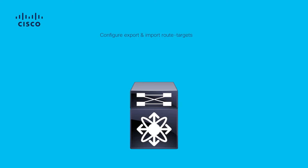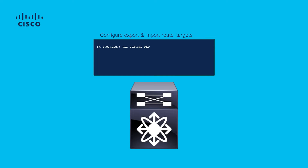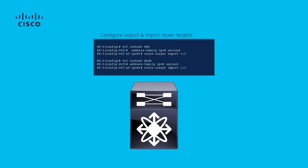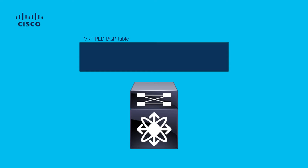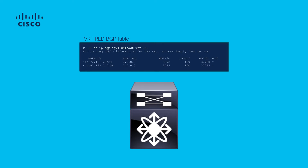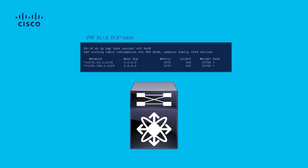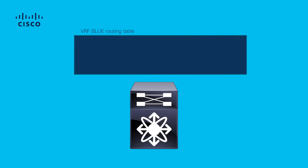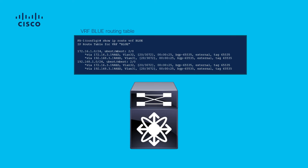In order to leak between VRFs, the use of route targets is required. The origin VRF exports a route target value. The destination VRF imports the same route target value. Verify their visibility via BGP VRF red. You can confirm in the destination VRF that the routes are now seen via BGP. These BGP routes in the VRF can now be redistributed into any other routing protocol that runs in the same VRF.